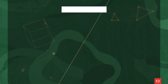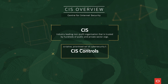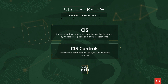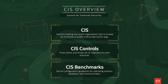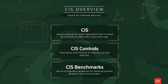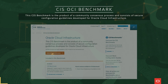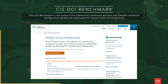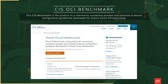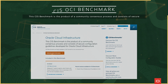Oracle Cloud Infrastructure has security in our DNA. The Center for Internet Security is an industry-leading non-profit organization trusted by hundreds of public and private sector organizations. The CIS OCI benchmark is the product of a community consensus process and consists of secure configuration guidelines developed for Oracle Cloud Infrastructure.